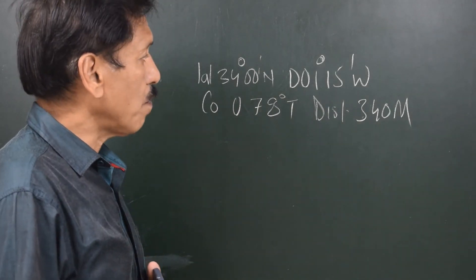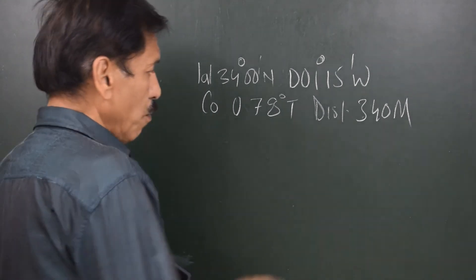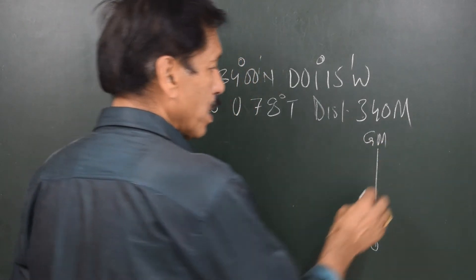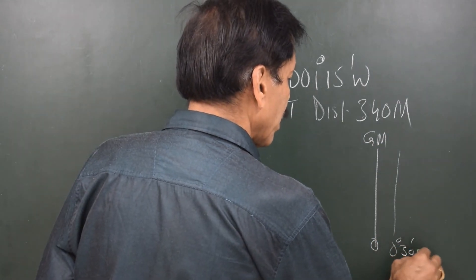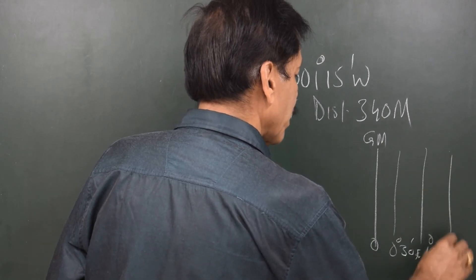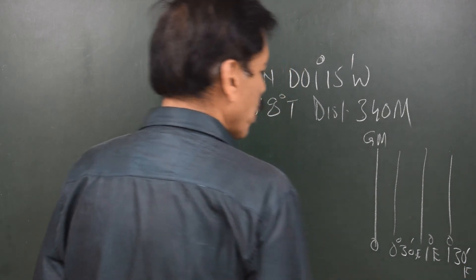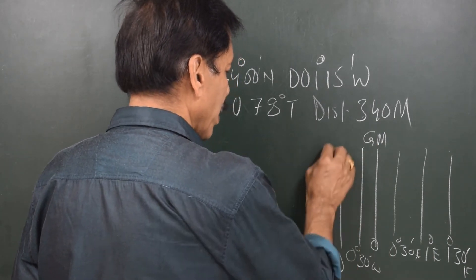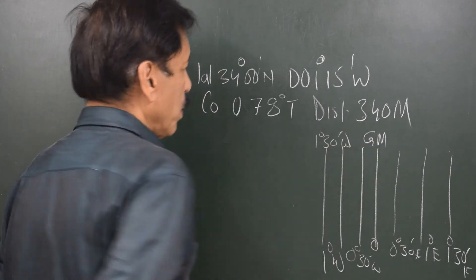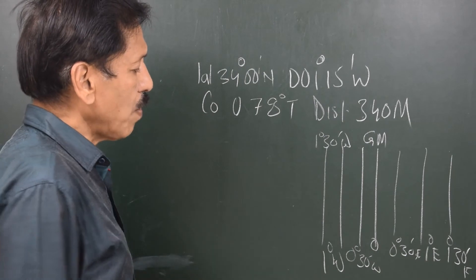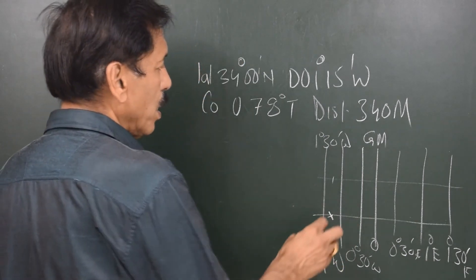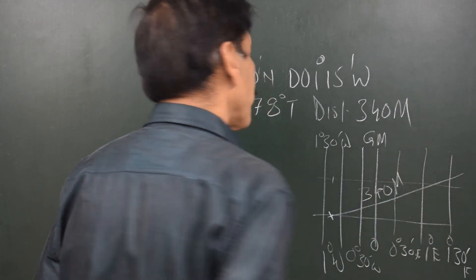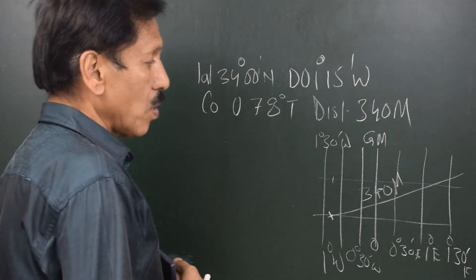First, let us understand the naming of longitudes near the Greenwich Meridian. On one side you have 0° 30' E, 1° E, 1° 30' E, and so on. On the other side you have 0° 30' W, 1° W, 1° 30' W, and so on. Starting from 1° 15' W and going on a course of 078° — which is nearly east — travelling 340 miles, you are likely to cross the Greenwich Meridian and arrive in easterly longitudes.